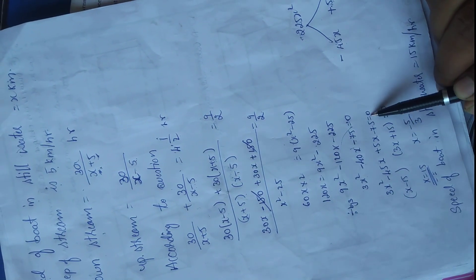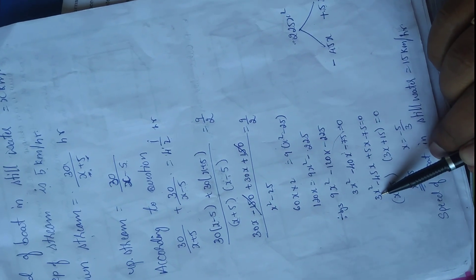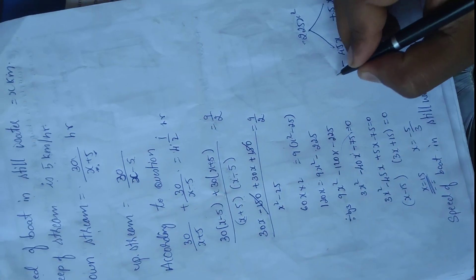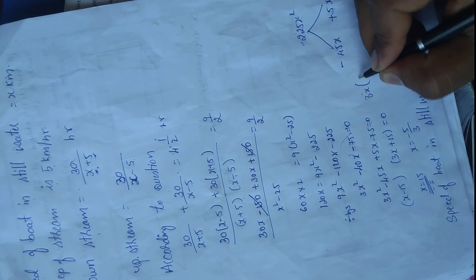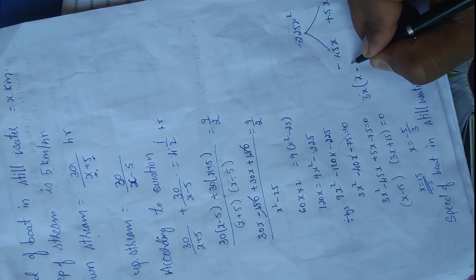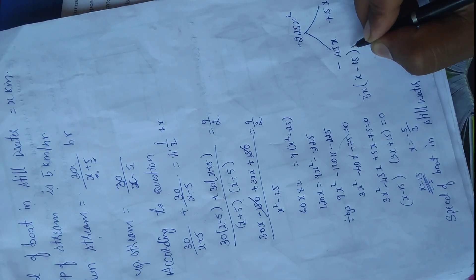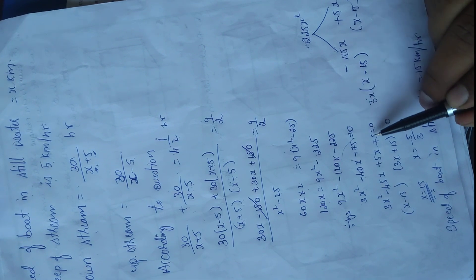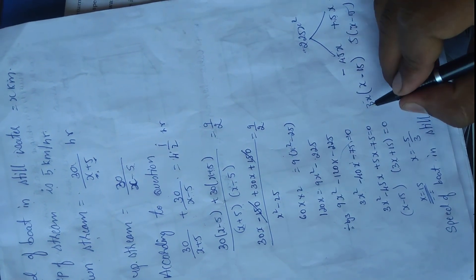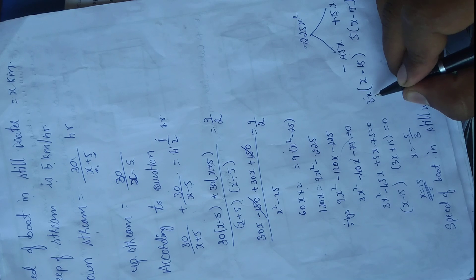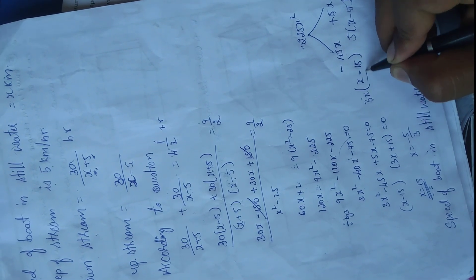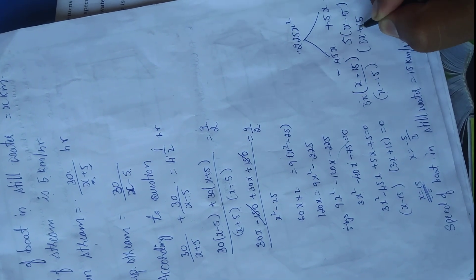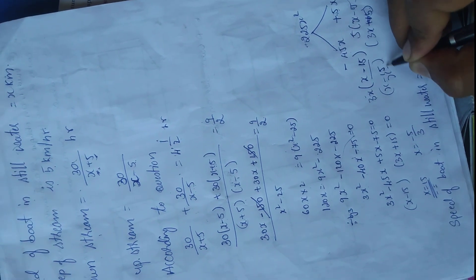Splitting the middle term: 3x squared minus 45x plus 5x minus 75 equals 0. Taking 3x common from the first two terms gives 3x(x minus 15), and taking 5 common from the last two terms gives 5(x minus 15). So we get (x minus 15)(3x plus 5) equals 0.